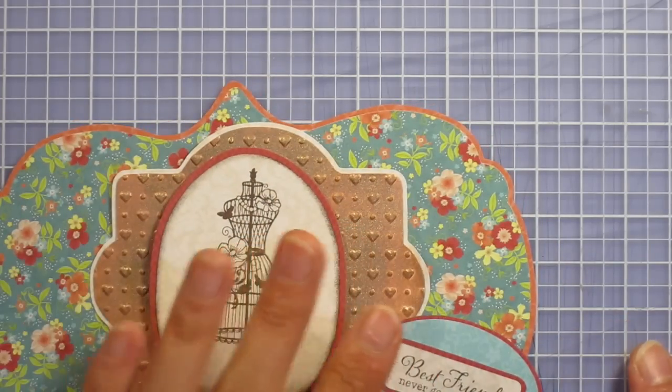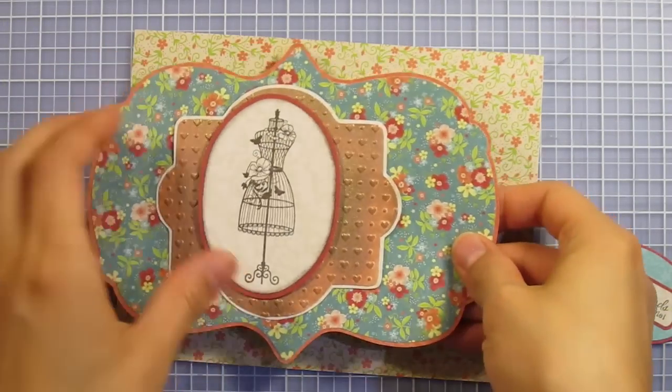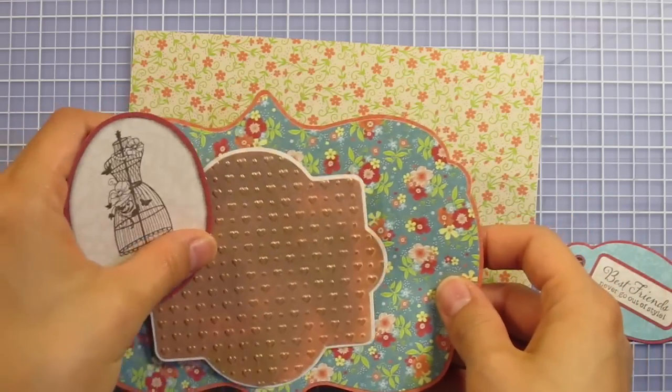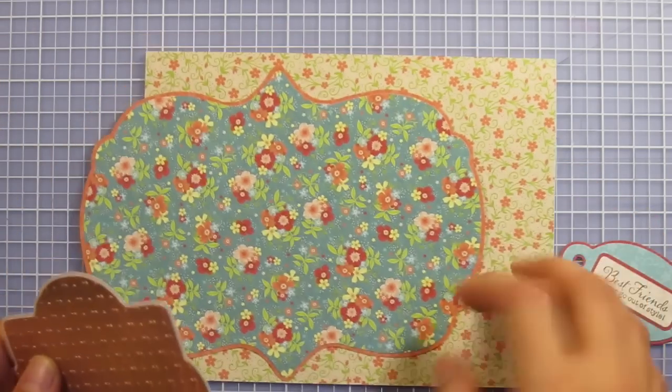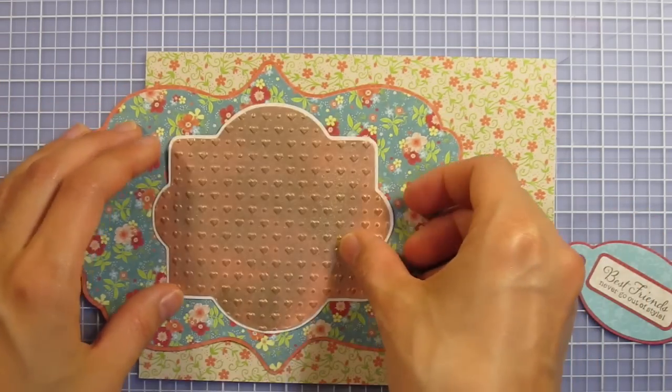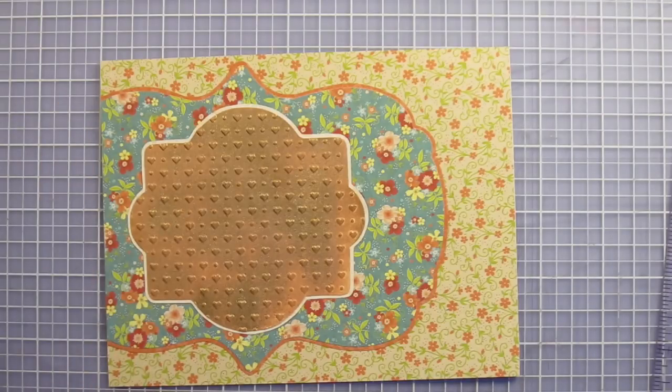I'm going to glue these things in place. First this, and I want it off center. Then this. I've sliced off the excess on this left side.